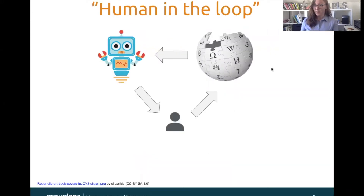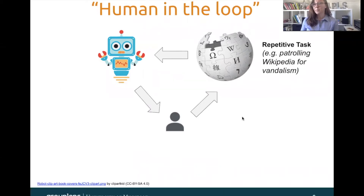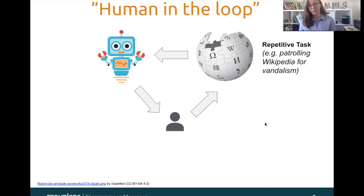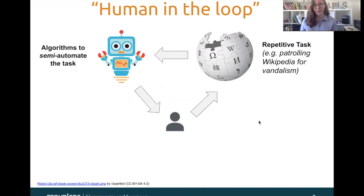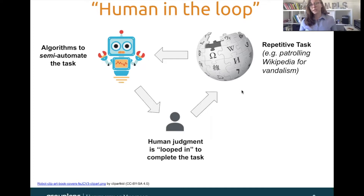Typically when we're talking about human-in-the-loop systems we have three major components. The first is that we have some type of a repetitive task that needs to happen continuously and often in real time — for example, patrolling Wikipedia for vandalism. The second component is some type of an algorithm that we're using to semi-automate the task. And finally we loop in a human to complete the task, because the general assumption is that human judgment is better than machine judgment.